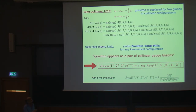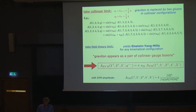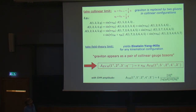So this three-gluon, one-graviton amplitude is described by a five-gluon amplitude times a factor. This is a very convenient way of deriving Einstein-Yang-Mills amplitudes at tree level. But now we want to explore what happens when we do not set the two gluon momenta equal.